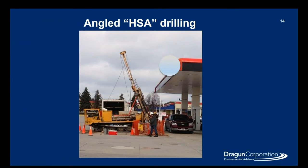A different variant of the hollow stem rigs is an angled hollow stem drill rig. It uses the same tooling and same rig, but it's put onto an angle, allowing for drilling to get under areas that have lower clearance or utilities that may hinder the drilling process. With this rig, we can go on an angle and get directly underneath our gas pump or the dispenser lines for the tanks.